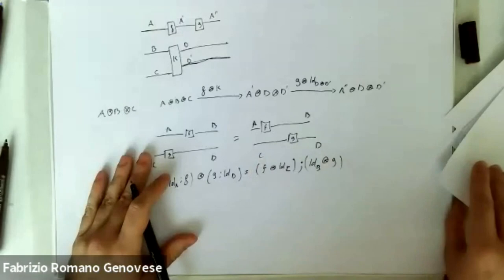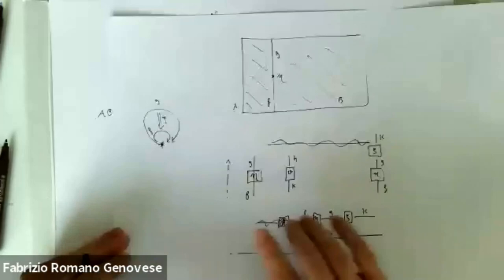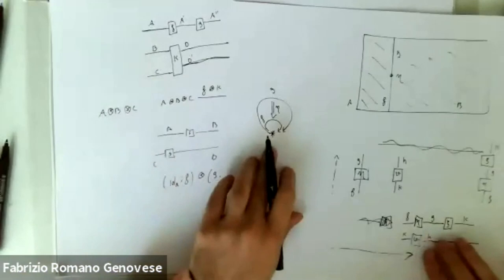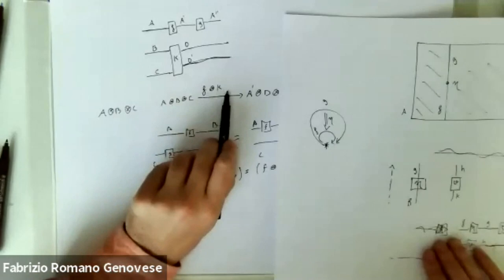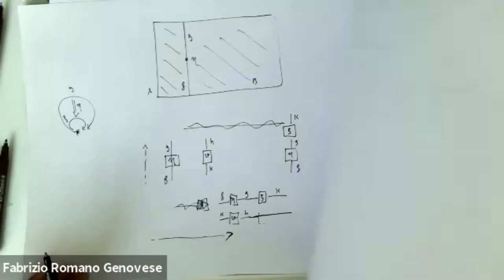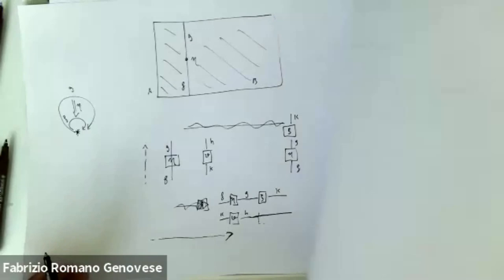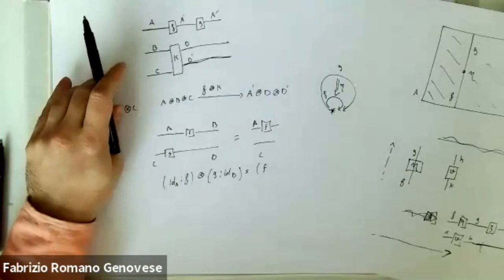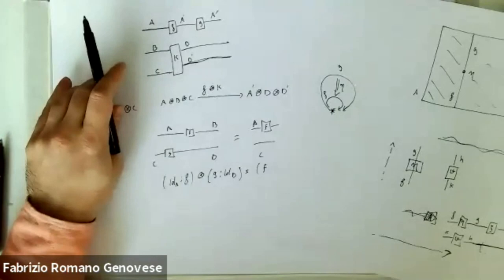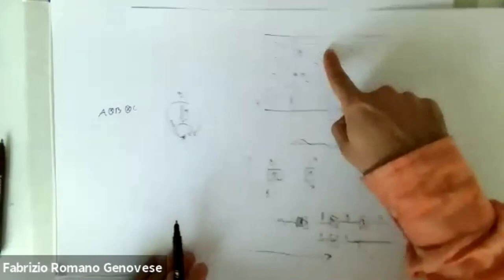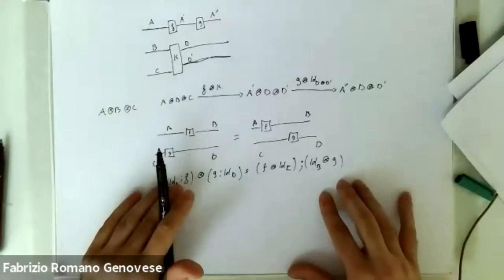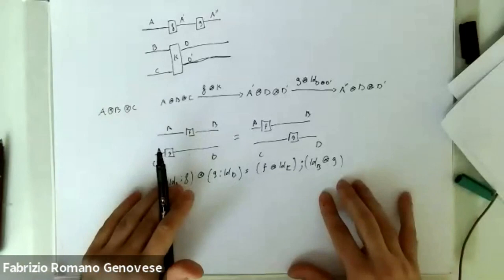As I told you, these monoidal categories can always be seen as two-categories with only one object. The objects of a monoidal category become the morphisms of these two-categories with one object, and the morphisms here become two-morphisms there. You can prove that these two definitions are equivalent. Starting from Poincaré duality, we had a nice graphical calculus for arbitrary two-categories, and using the fact that monoidal categories are equivalent to two-categories with only one object, we specialized this graphical calculus. All these steps are formal — you can prove as theorems that this graphical calculus actually works.